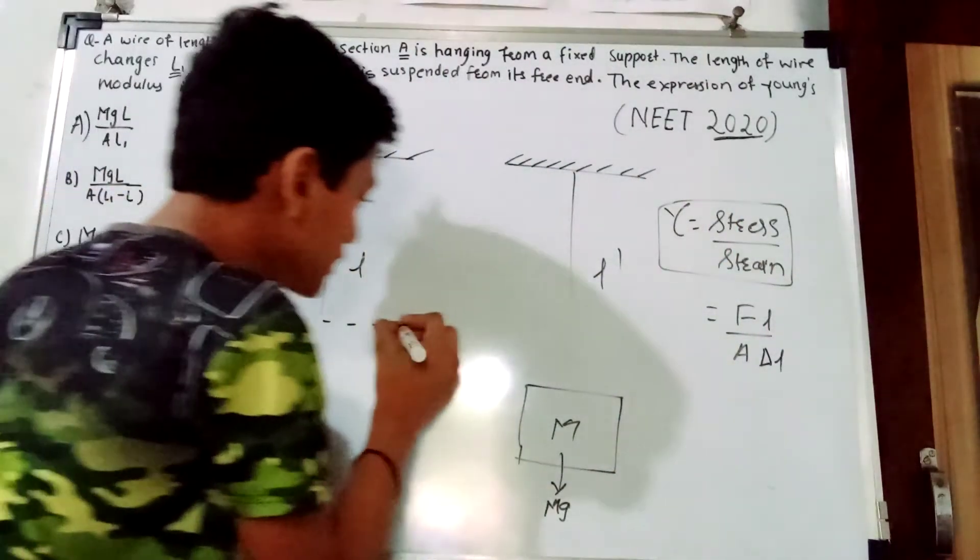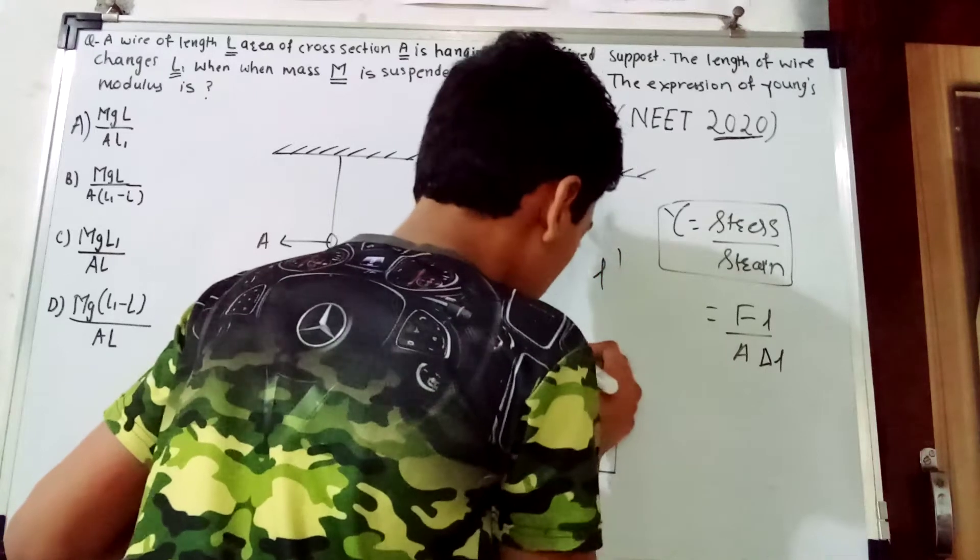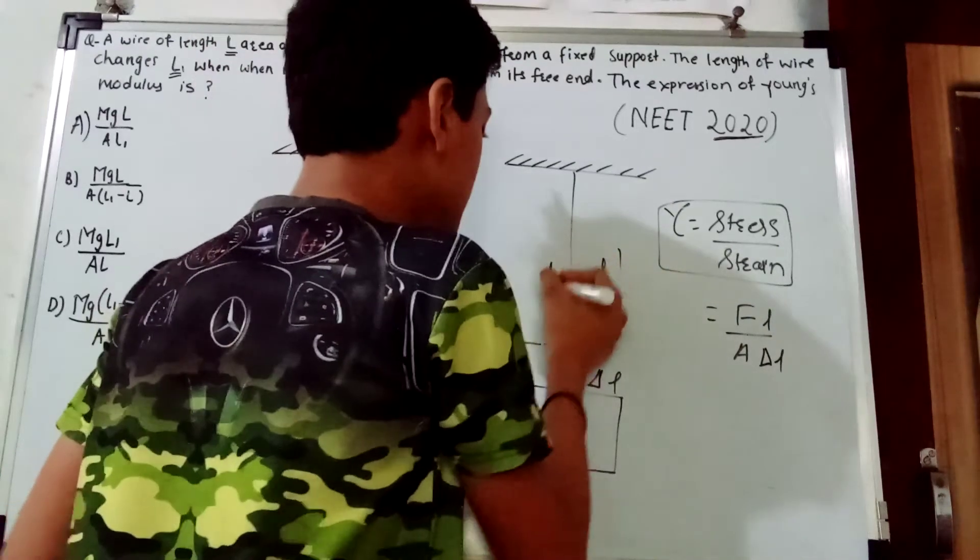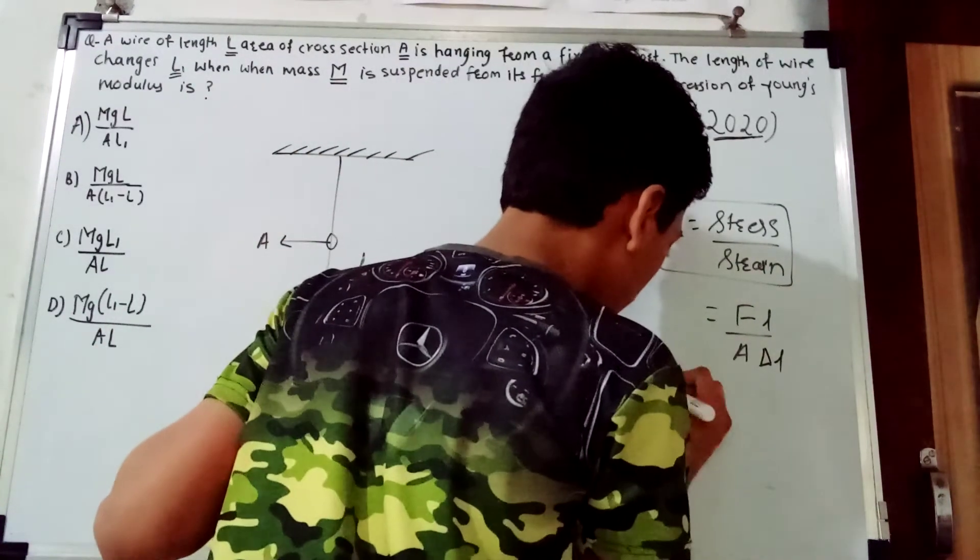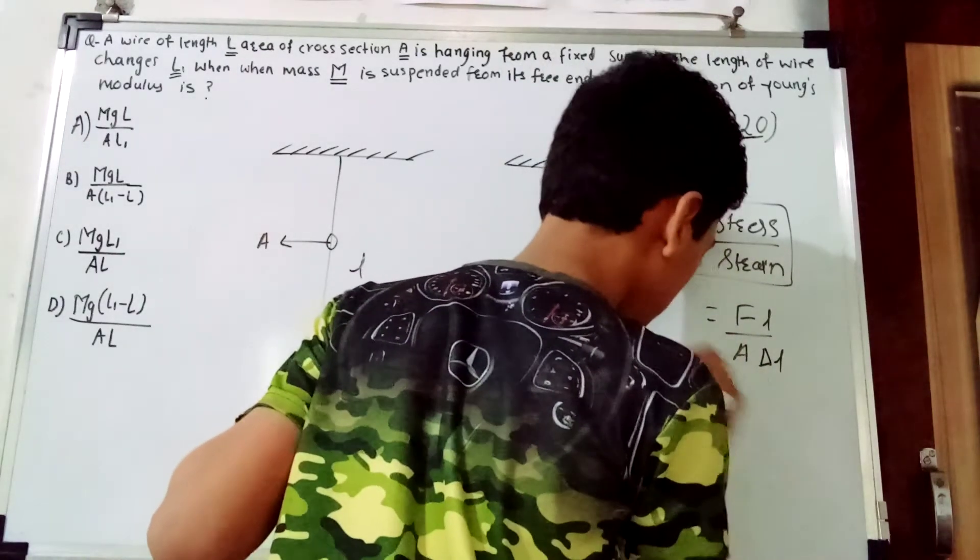What is the change in length? This is the original length L, and this is delta L. This much is the delta L, and this total is L'. So what will be delta L? Delta L is equal to L' minus L.